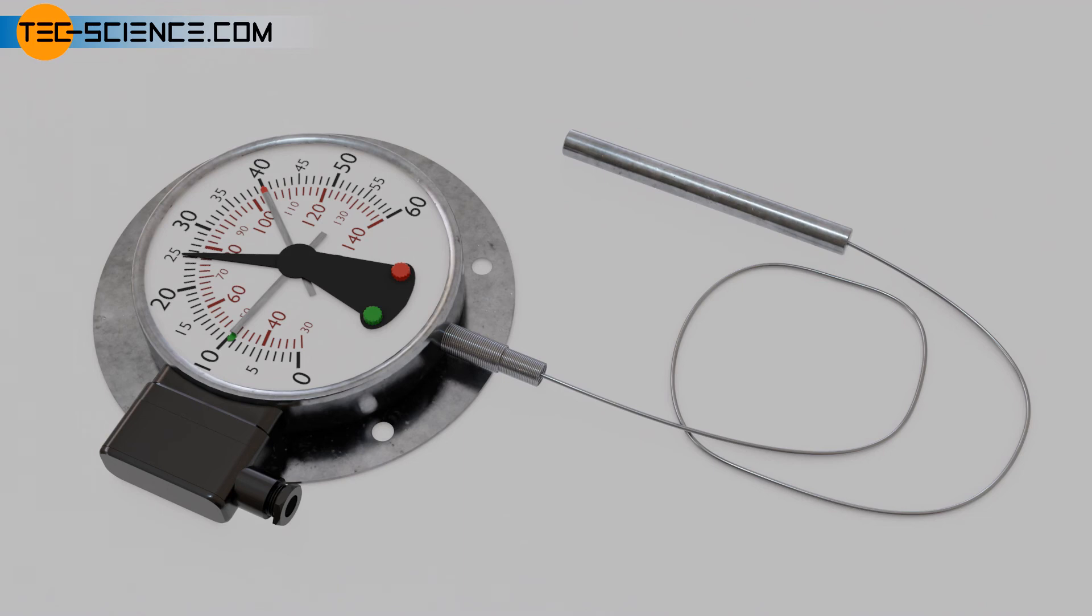However, it must be noted that liquid-in-metal thermometers react relatively slowly to temperature changes. This is due to the relatively large heat capacity of the thermometric liquid, as liquids generally require a relatively long time to adapt to the temperature changes.